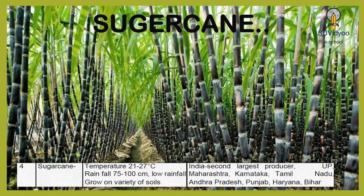Sugarcane takes almost one year to grow. It requires temperature between 21 to 27 degrees Celsius and rainfall between 75 to 100 centimetres. It grows well on a variety of soils. India is the second largest producer of sugarcane in the world. In India, it is mainly grown in UP, Maharashtra, Karnataka, Tamil Nadu, Andhra Pradesh, Punjab, Haryana and Bihar.